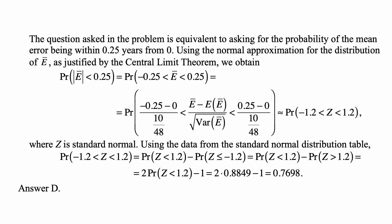If we subtract its mean and divide by its standard deviation, that result is approximately standard normal. So we subtract the mean and divide by standard deviation on both sides of both inequalities, so we get negative 0.25 minus 0 over square root of (10/48) on the left, and on the right-hand side we have 0.25 minus 0 over square root of (10/48). That's the standard deviation of E-bar.